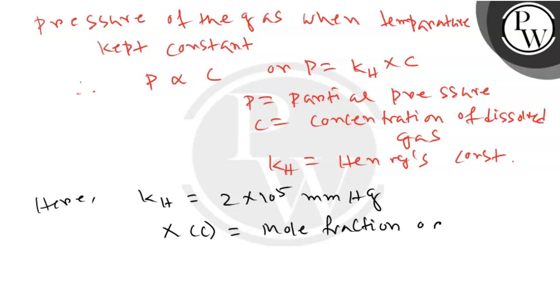Now putting all the values in the equation, we know that we have the partial pressure which is 760 mm Hg.